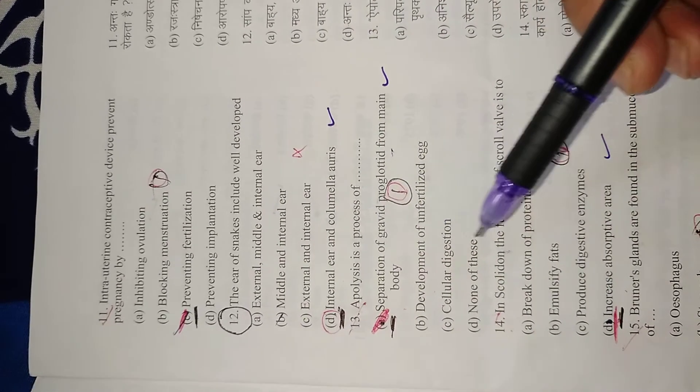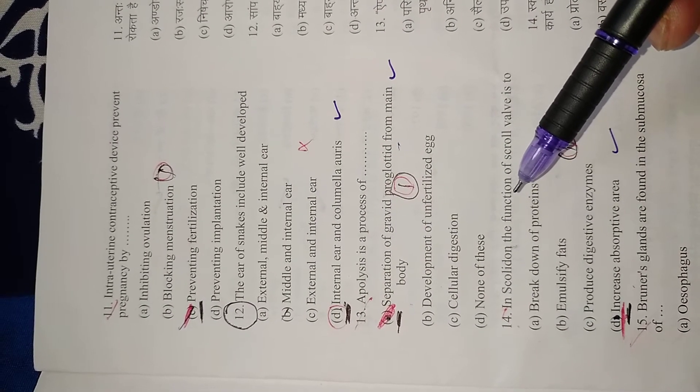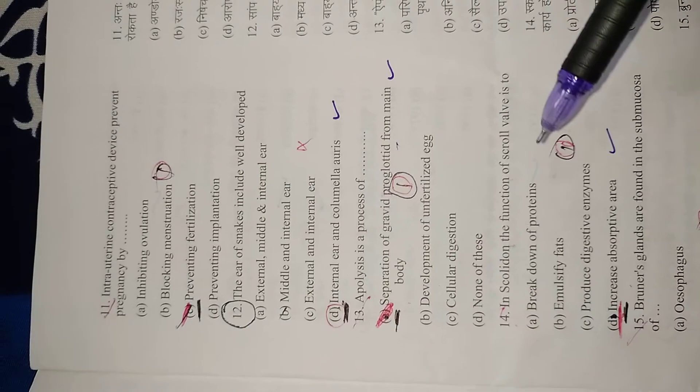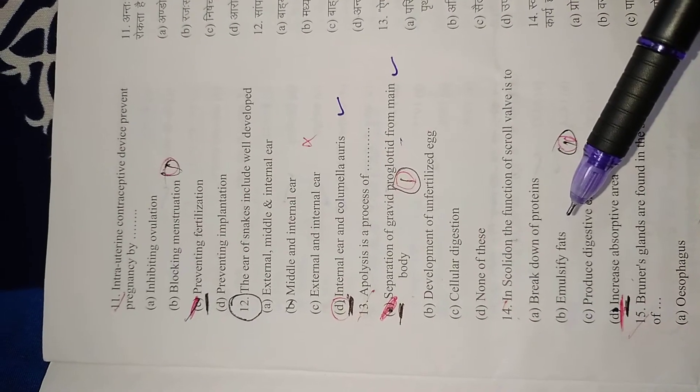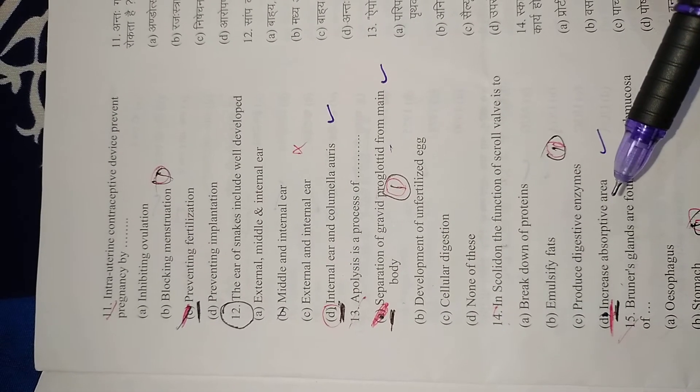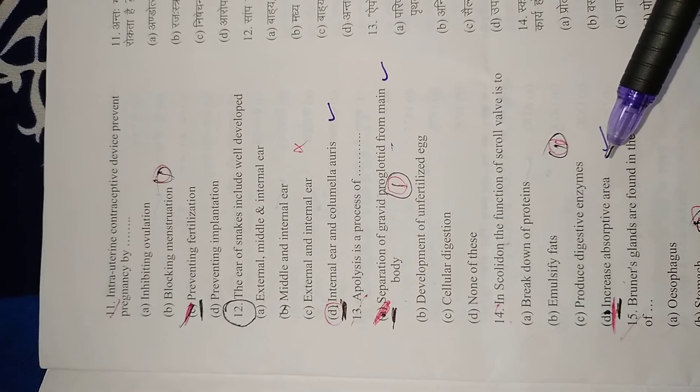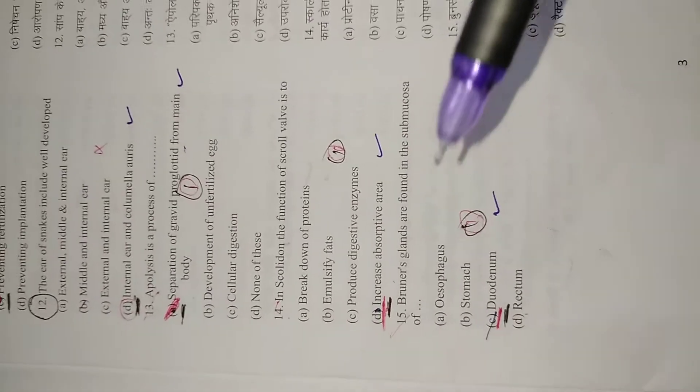Question 14: The function of spiral valve is to increase the absorptive area. The spiral valve is present in the intestine of Scoliodon. Right option is D, to increase the absorptive area. Question 15: Brunner's glands are found in the submucosa of duodenum.